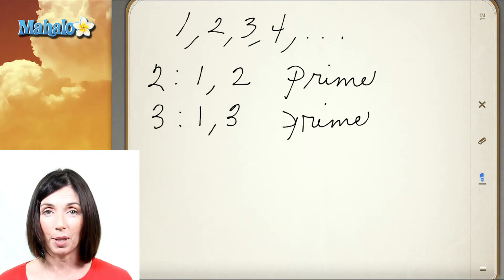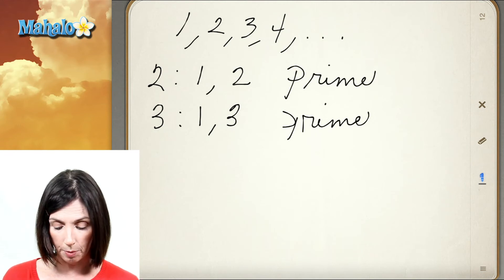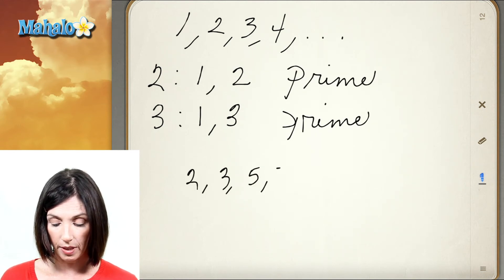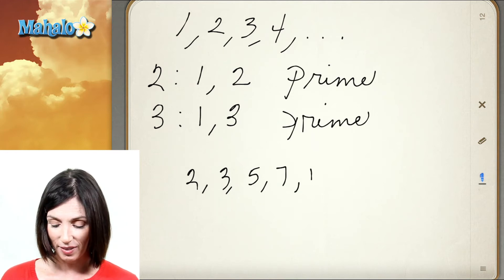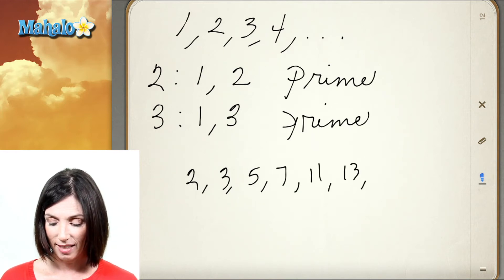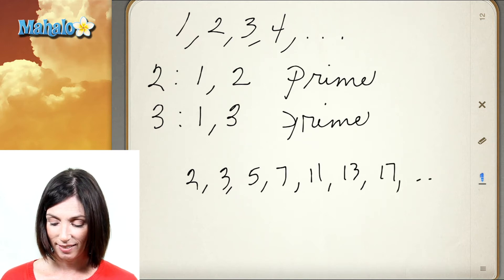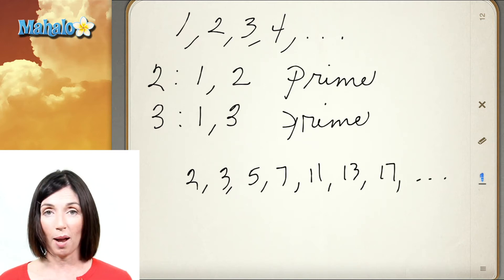5 is also a prime number. In fact, the first few prime numbers are 2, 3, 5, 7, 9 isn't because 3 goes into 9, 11, 13, 17, etc. There are infinitely many prime numbers.